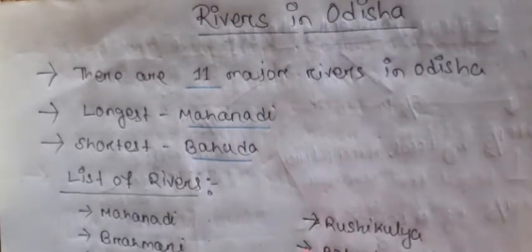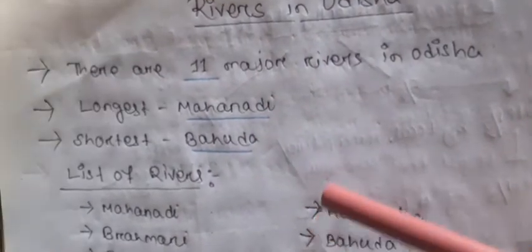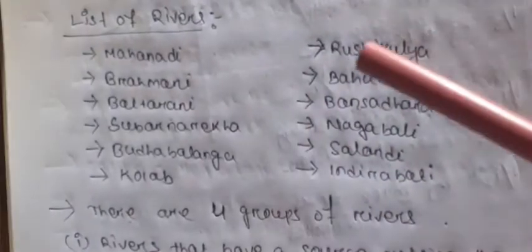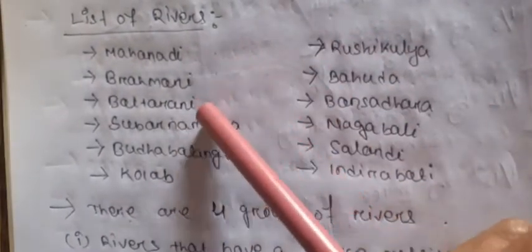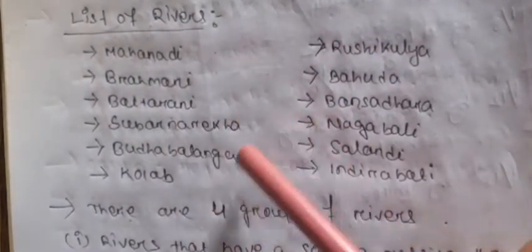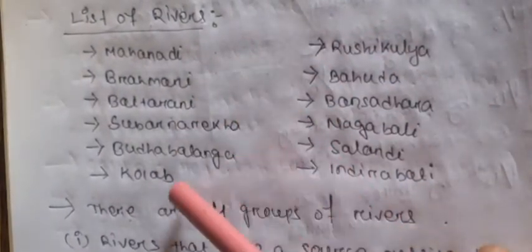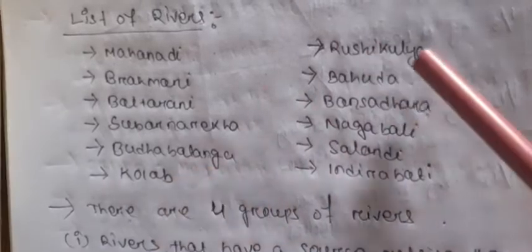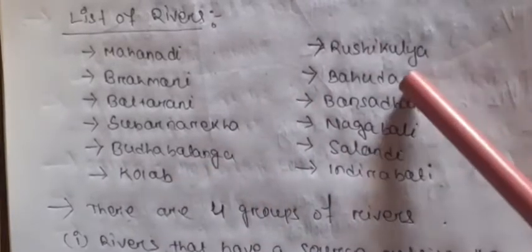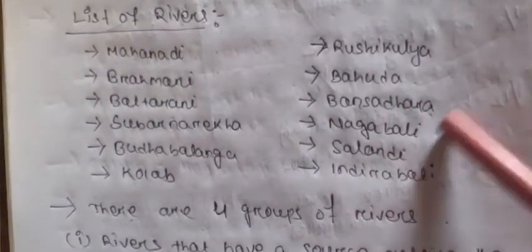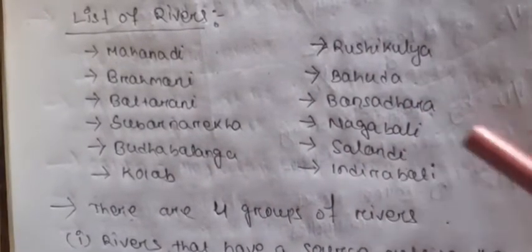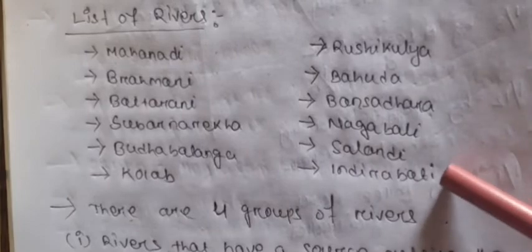But we discuss only about major rivers. The list of rivers are: Mahanadi, Brahmani, Vaitarani, Subarnarekha, Budha-Balanga, Kolab, Rusi-Kulya, Bahuda, Bangsodara, Nagabani, Salandi, and Indiravati.